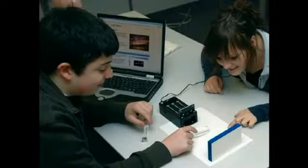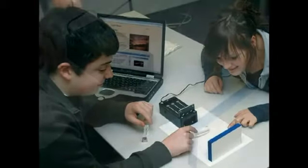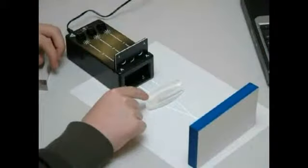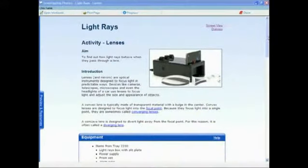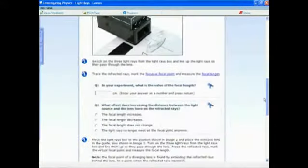Next, students perform an experimental investigation. In this example, they are performing an experiment using lenses to observe how light is bent. They follow the inquiry model of aim, equipment, method, results, and conclusion.